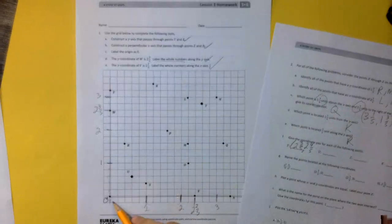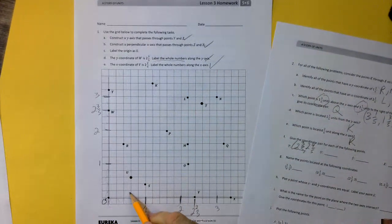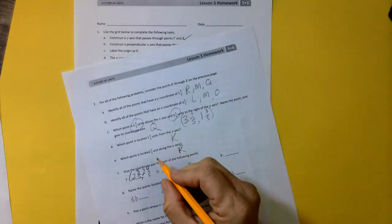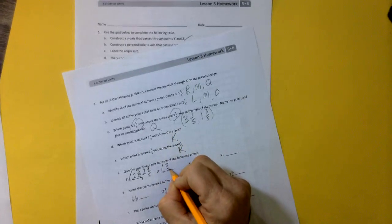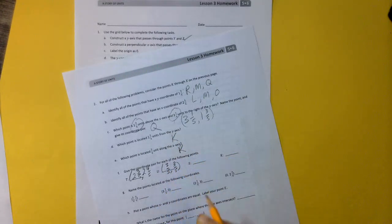U. U is right here. 1 fifth, 2 fifths, 3 fifths. Up 1 fifth, 2 fifths, 3 fifths. So U is 3 fifths and 3 fifths.